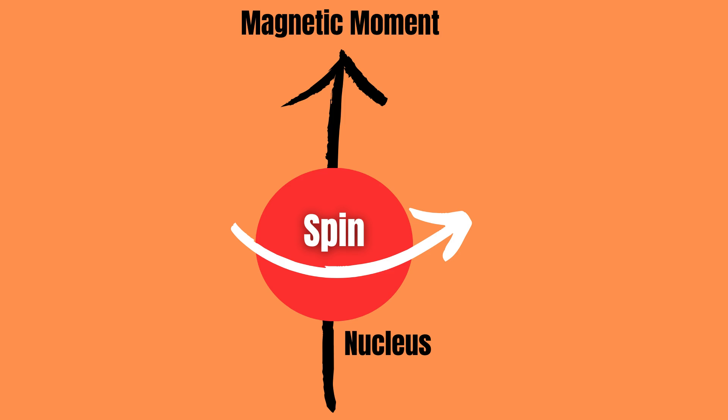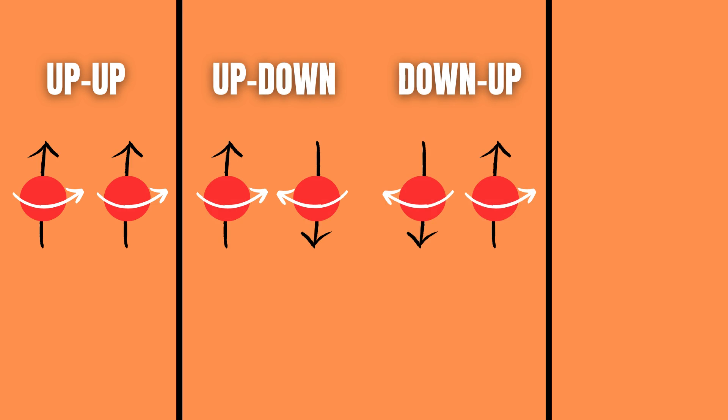The intensities are dependent on the possible spin states of the protons in one group. Consider a doublet where the spin states can either be up-up, up-down, down-up, or down-down.